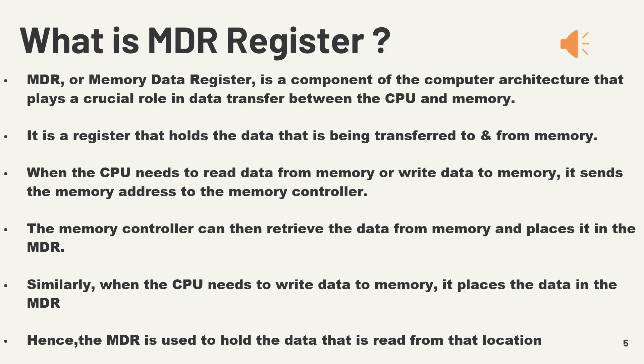What is the MDR register? MDR, or the memory data register, is a component of computer architecture that plays a crucial role in data transfer between the CPU and memory. It is the register that holds the data being transferred to or from memory. When the CPU needs to read data from memory, it sends the memory address to the memory controller. Similarly, when the CPU needs to write data to memory, it places the data in the MDR. The MDR is used to hold data that is read from or written to a memory location.